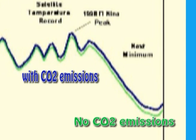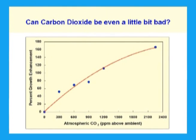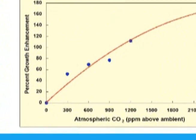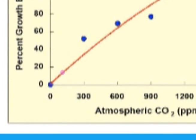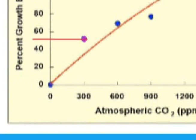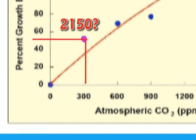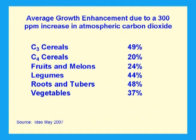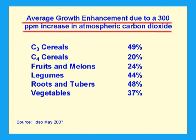Carbon dioxide is not even a little bit bad — it is wholly beneficial. This graph from a recent paper shows plant growth response to atmospheric carbon dioxide enrichment. The 100 ppm carbon dioxide increase since the beginning of industrialisation has been responsible for an average increase in plant growth rate of 15 per cent. The 50 per cent increase in plant growth rate due to a 300 ppm increase in atmospheric carbon dioxide can be expected about the middle of the next century.